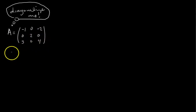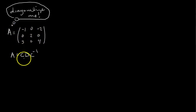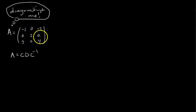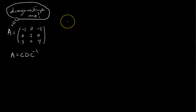So we want to diagonalize this — we have to write A as the product of three matrices C, D, C-inverse. This matrix A is 3 by 3, so C is going to be 3 by 3 and C has to be invertible. We need to come up with three linearly independent eigenvectors of A. Let's see if we can do that, because A wants to be diagonalized, but maybe it's not even diagonalizable — we got to check.